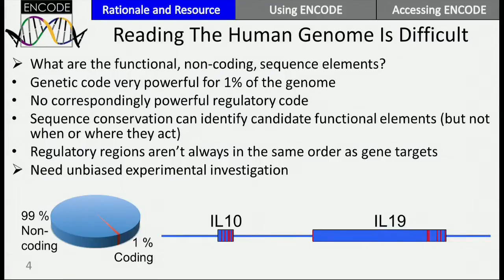Something that became obvious as the human genome project was going on is that reading genomes is very difficult. We know from applying the genetic code that only a small portion — about 1% of the human genome — codes for protein. This means that if you want to learn about the non-coding portion of the genome and what it's doing, you have a difficult problem because there isn't any regulatory code you can apply to find out what parts of the genome are doing something.